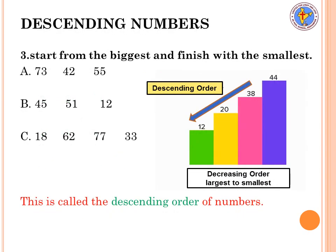Now we will learn about descending order. In ascending order we write from smaller to bigger; in descending order we write from bigger to smaller — starting from the biggest number down to the smallest. For example, with the numbers 73, 42, and 55: the biggest is 73, then 55, then 42. So the answer is 73, 55, 42.